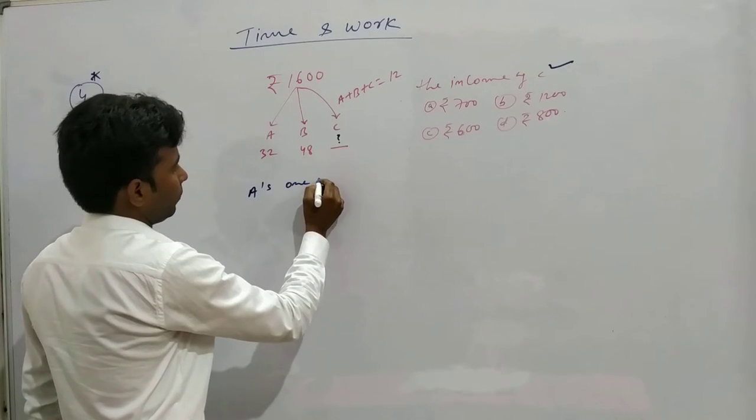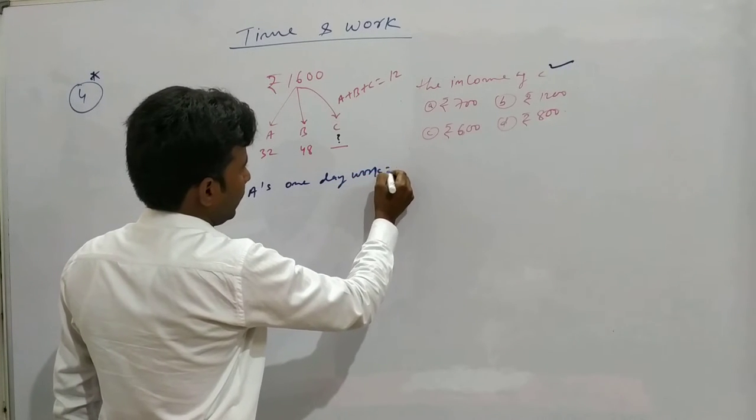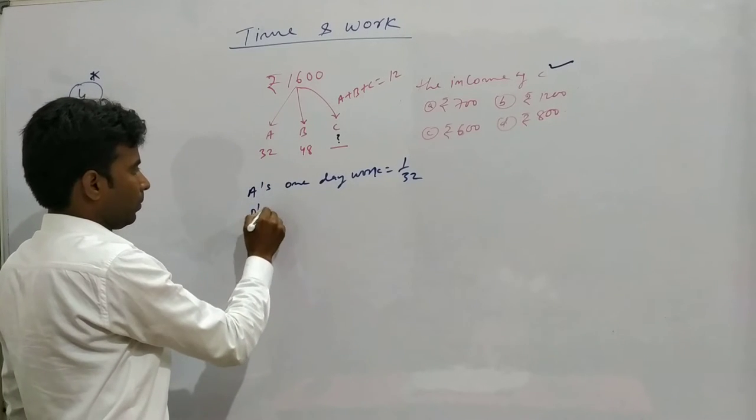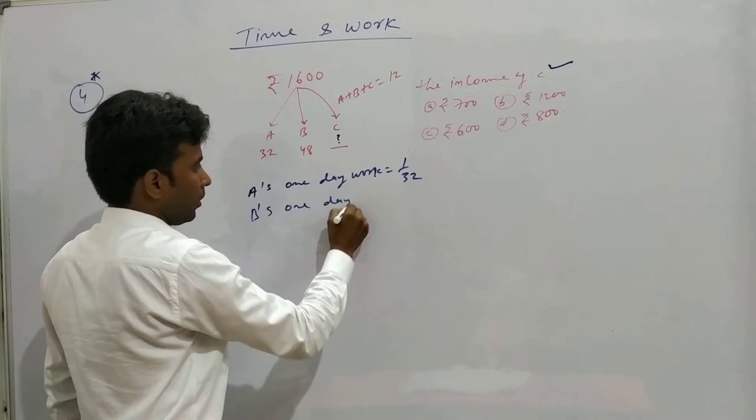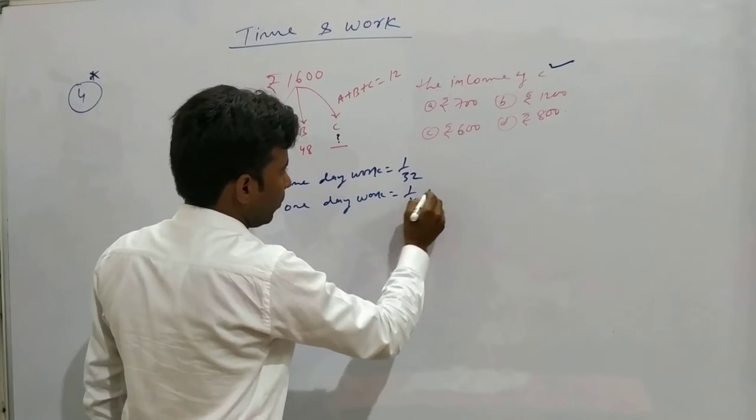A's one day work equals one upon 32. B's one day work equals one upon 48.